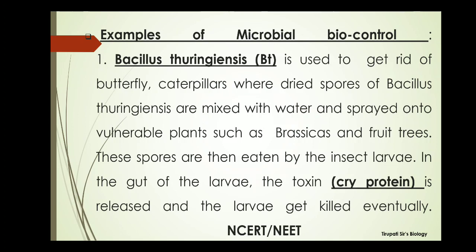Bacillus thuringiensis can be sprayed on plants like Brassica and fruit-bearing trees. Brassica is a genus belonging to the Brassica family. When we spray Bacillus thuringiensis on plants, whatever insect or insect larvae ingest it will be killed. So Bacillus thuringiensis is used as a microbial biocontrol agent.